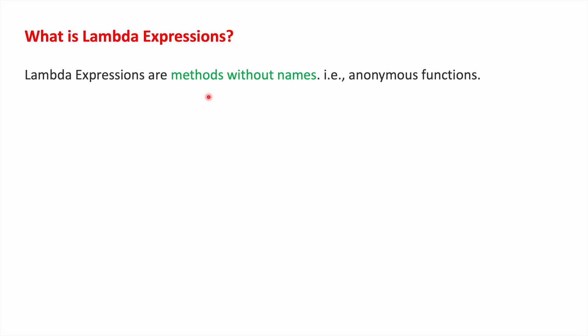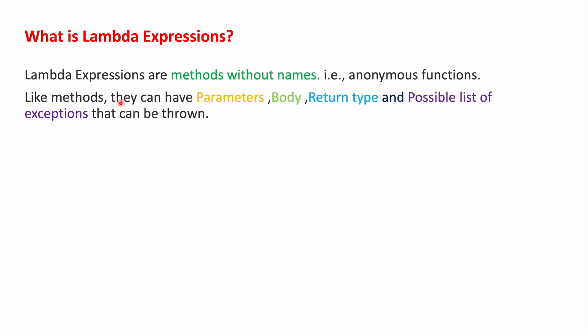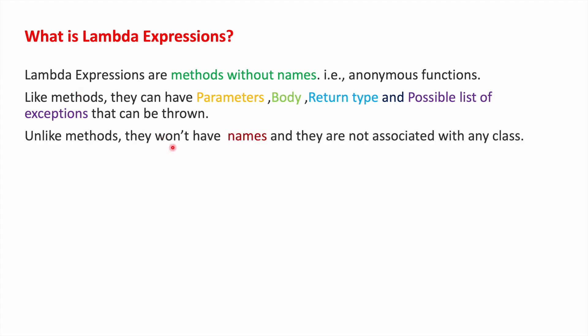Anonymous functions will not have names. Lambda expressions, like methods, can have parameters, a body, a return type, and a possible list of exceptions that can be thrown. Unlike methods, lambda expressions won't have names and they are not associated with any class. Methods belong to an interface or a specific class, but lambda expressions are not associated with any class.